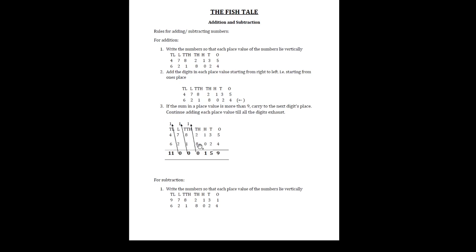Two plus eight makes ten, so here zero comes down and one is carried to the next higher place value — the ten thousands place. Since two plus eight is ten, we write zero and carry one. Now we add one plus eight plus one: nine plus one becomes ten, so we write zero here and carry one to the next place value.